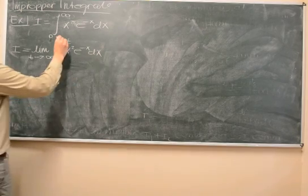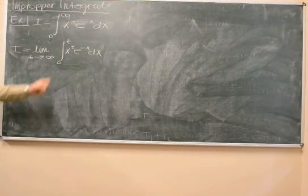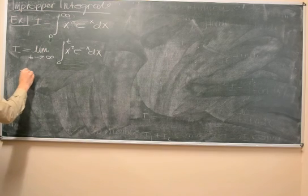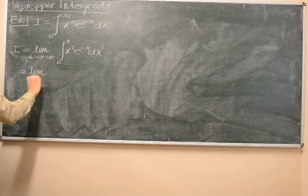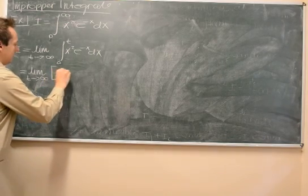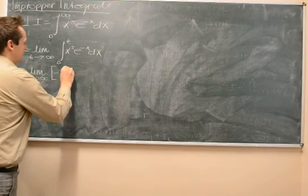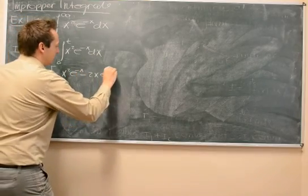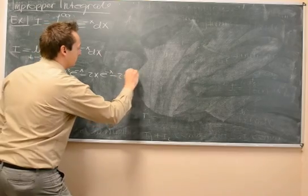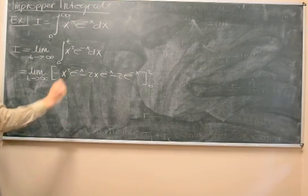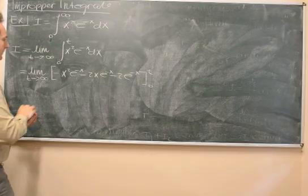The second step is to evaluate the definite integral from 0 to t. Using integration by parts, which I'm not going to do here in detail, we get minus x squared e to the minus x, minus 2x e to the minus x, minus 2 e to the minus x. We used integration by parts here.